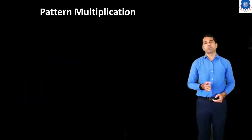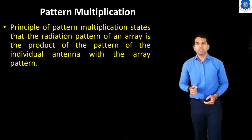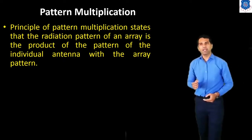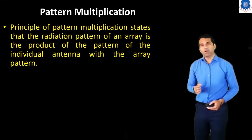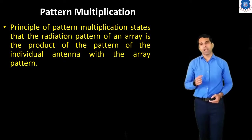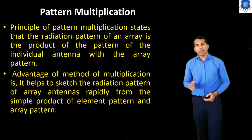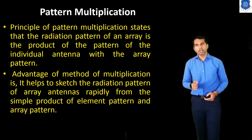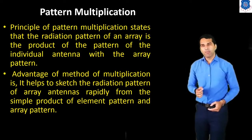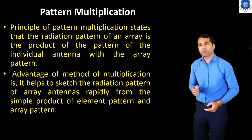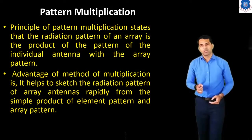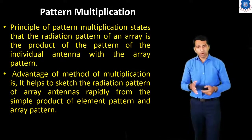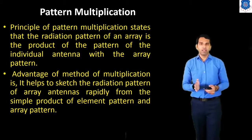Now we discuss pattern multiplication. The principle of pattern multiplication states that the radiation pattern of any array is the product of the pattern of the individual antenna and the array pattern. The advantage of this method is that it helps to sketch the radiation pattern of an array antenna rapidly from the simple product of the element pattern and the array pattern, allowing us to produce the radiation pattern in our desired direction.